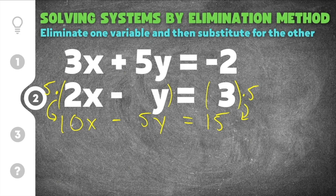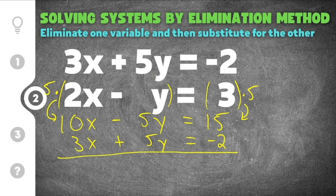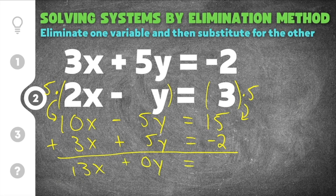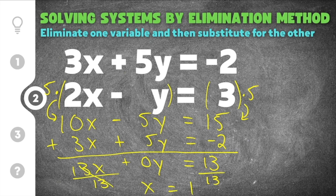Now we have to add this transformed equation to our first equation. I'll rewrite the first equation: 3x plus 5y equals negative 2, and add straight down. 10x plus 3x is 13x. Negative 5y plus positive 5y cancels to 0y. And 15 plus negative 2 is 13. So we have 13x equals 13. Dividing both sides by 13, we get x equals 1. I'll take x equals 1 and substitute it back into the first equation to solve for y, so I'll rewrite it: 3x plus 5y equals negative 2.